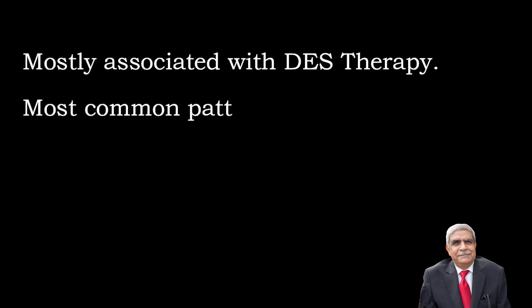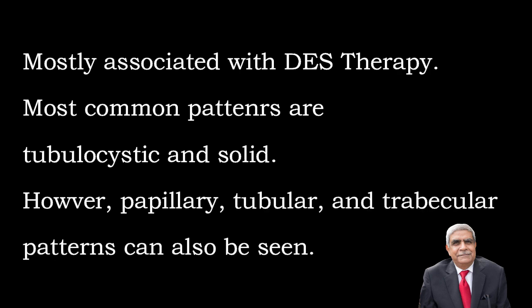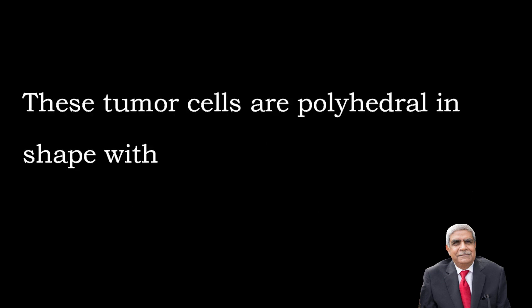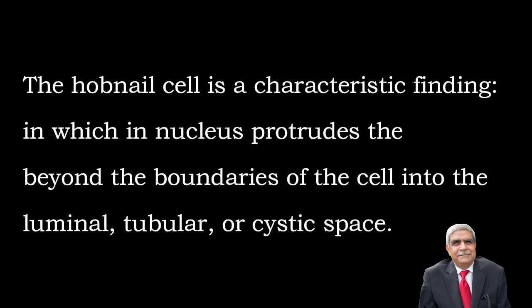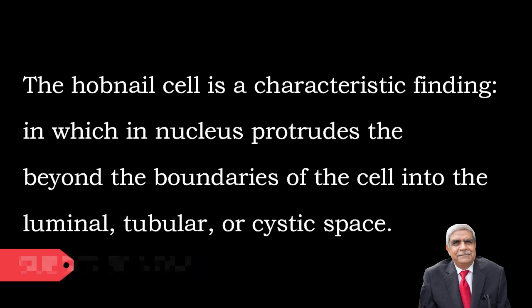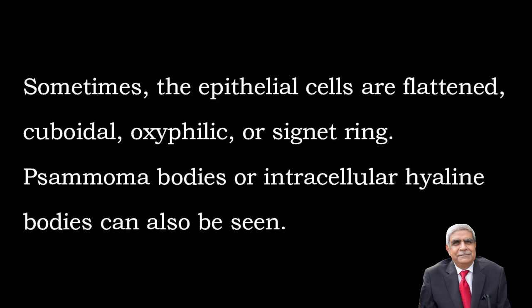There is another subtype called clear cell adenocarcinoma, mostly associated with diethylstilbestrol therapy. Most of the patterns are tubulocystic and solid; however, papillary and tubular patterns are also present. These tumor cells are polyhedral in shape with rounded atypical nuclei and clear cytoplasm containing glycogen. The hobnail cell is a characteristic finding in which the nucleus protrudes beyond the boundaries of the cell into the lumen of tubular or cystic spaces. Sometimes the epithelial cells are flattened, cuboidal, oxyphilic, or signet ring type. Psammoma bodies or intraluminal hyaline bodies may also be seen.